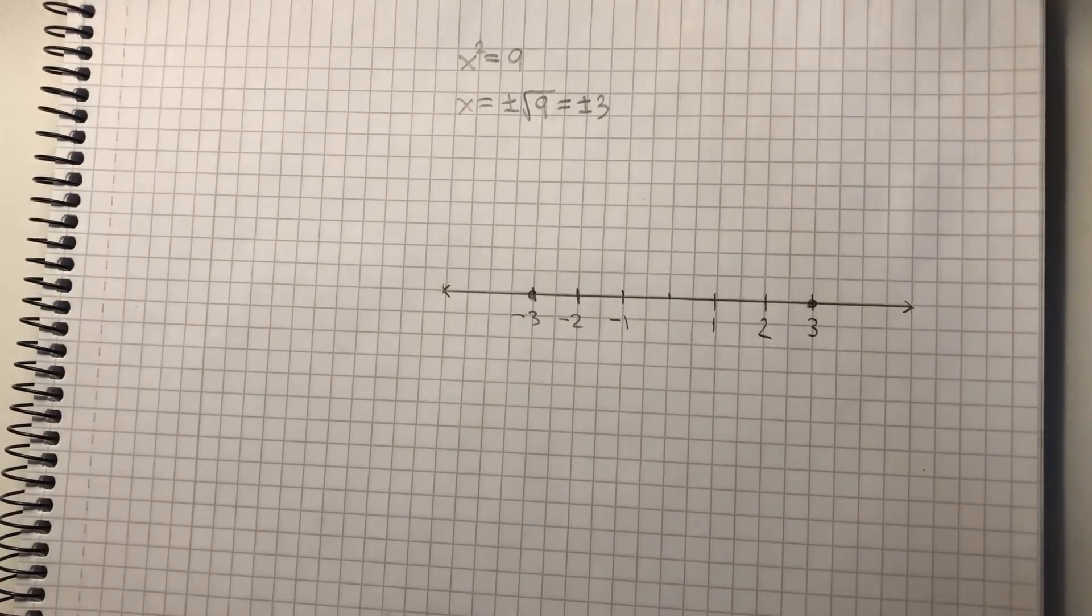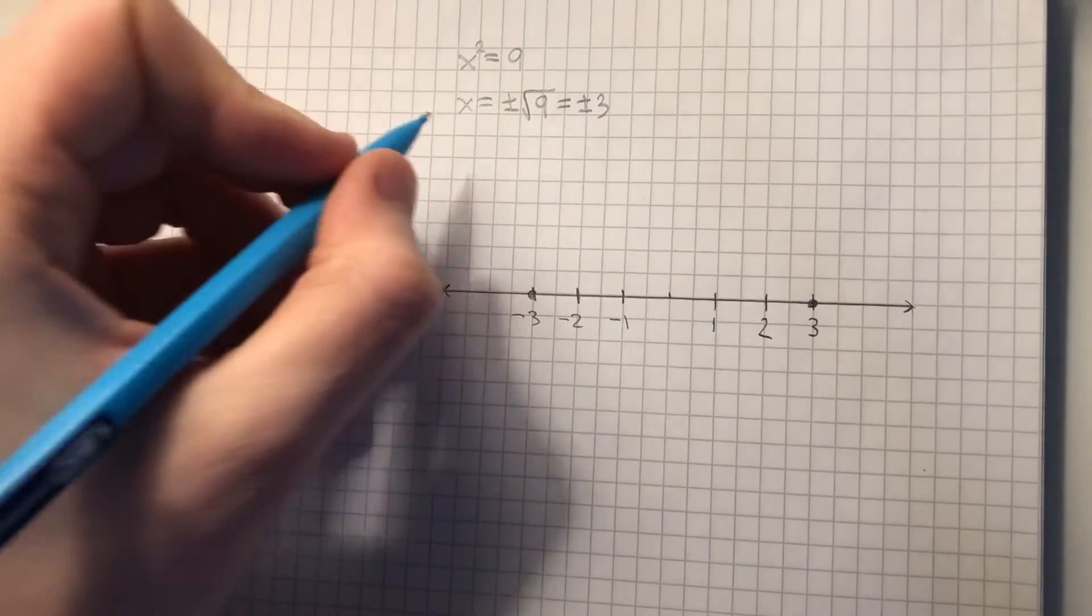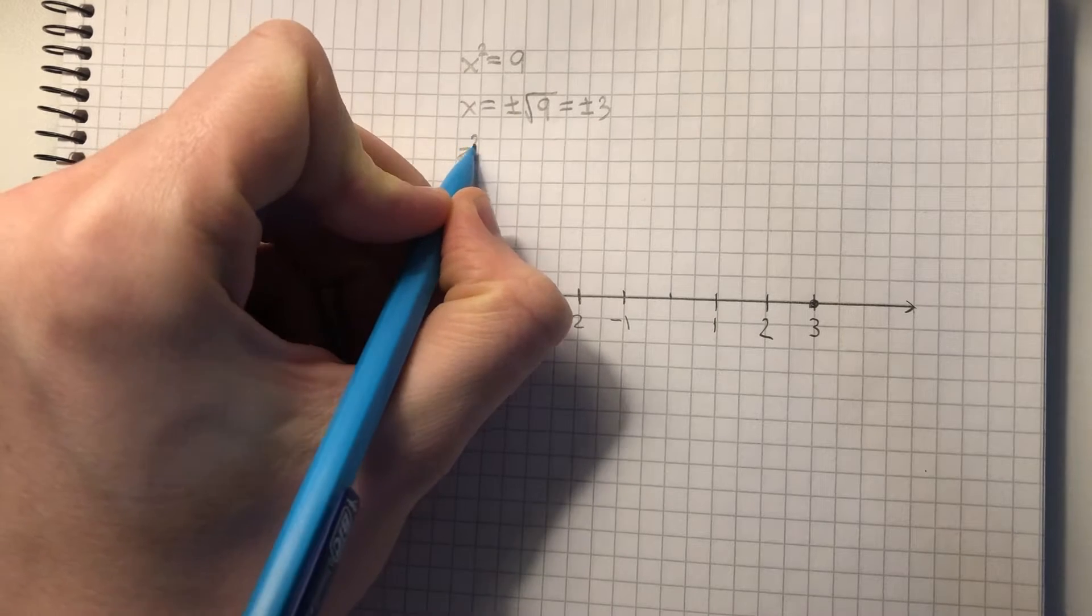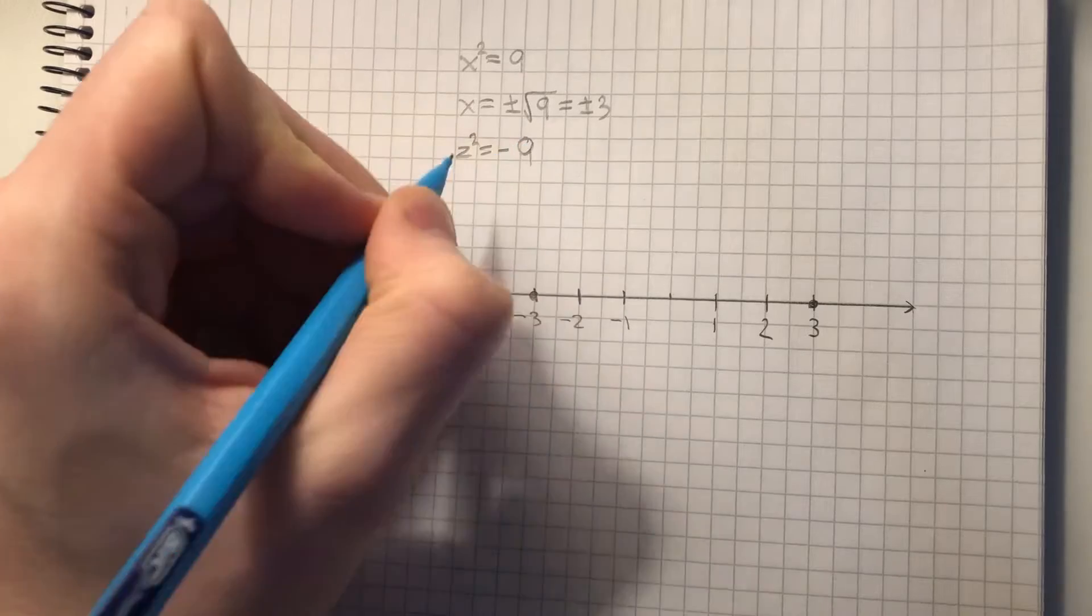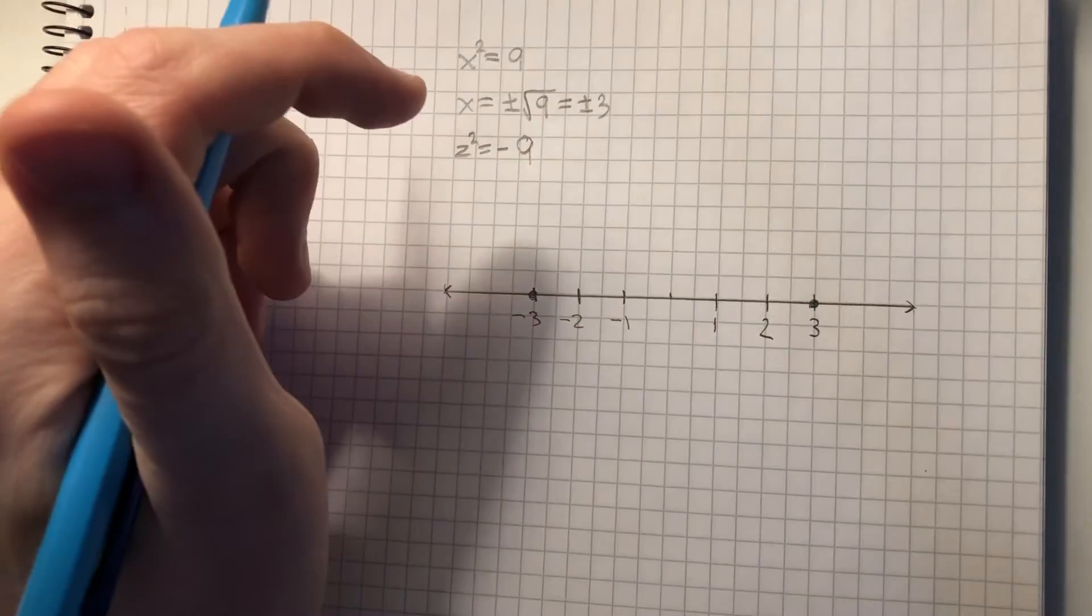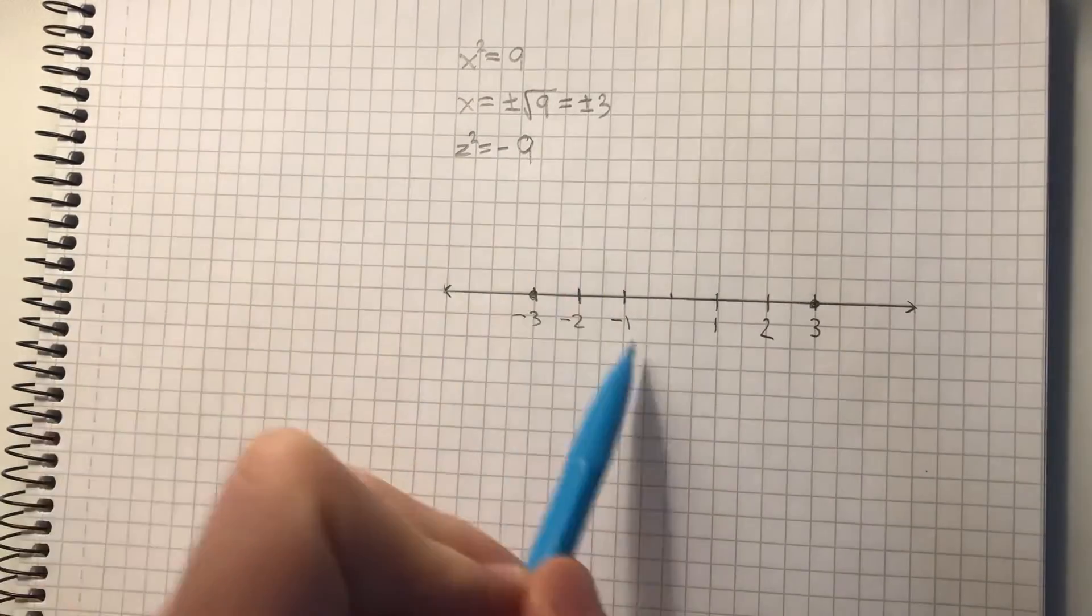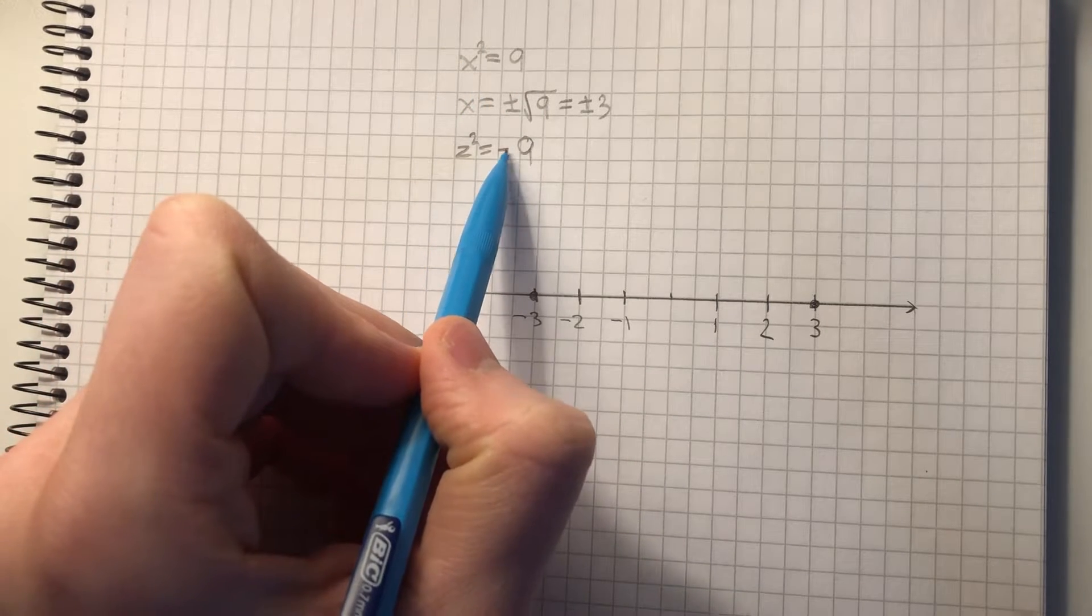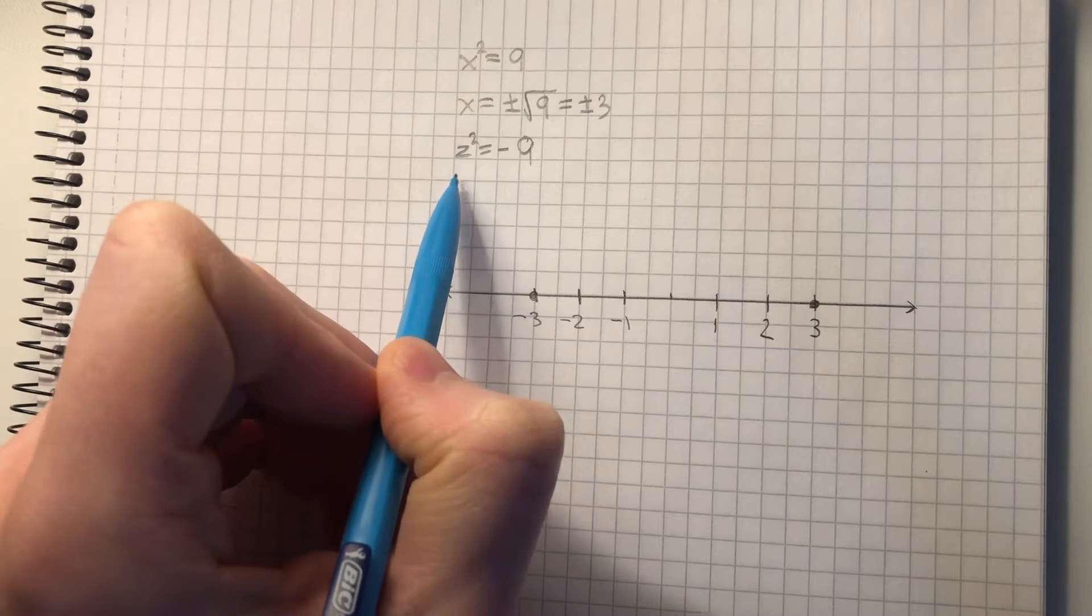But what if we were to have a different variable z, where z² equals minus 9? Now we're running into some problems, because as we see on the number line, we cannot get a negative number from a number times itself.